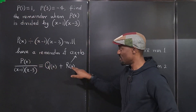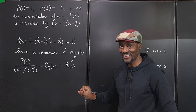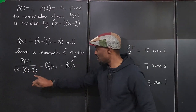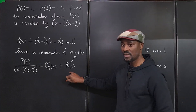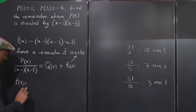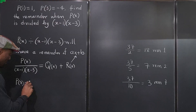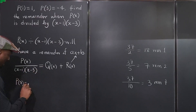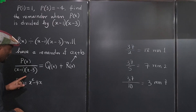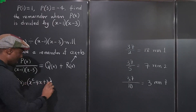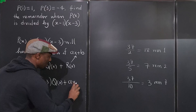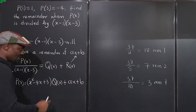We can say the original polynomial P(x) equals the divisor times Q(x) plus the remainder. So P(x) = (x² - 4x + 3)·Q(x) + ax + b. We don't know what ax + b is yet, but we don't need to worry about Q(x) — that's the key insight.